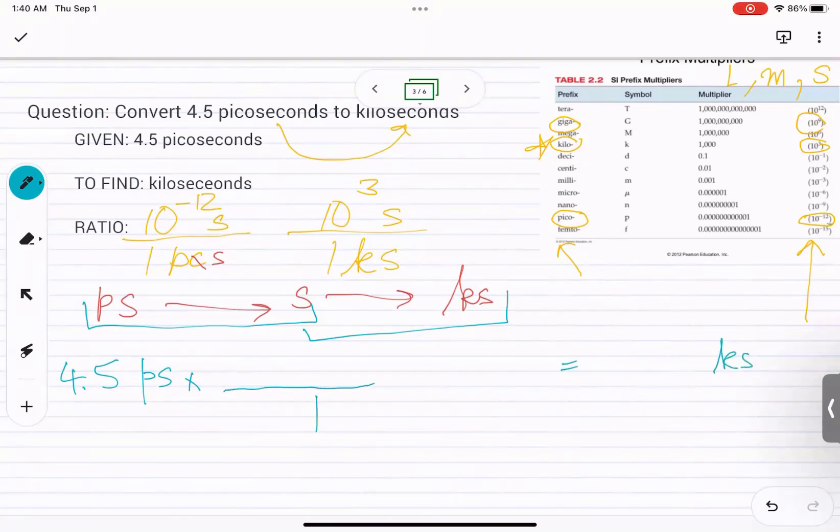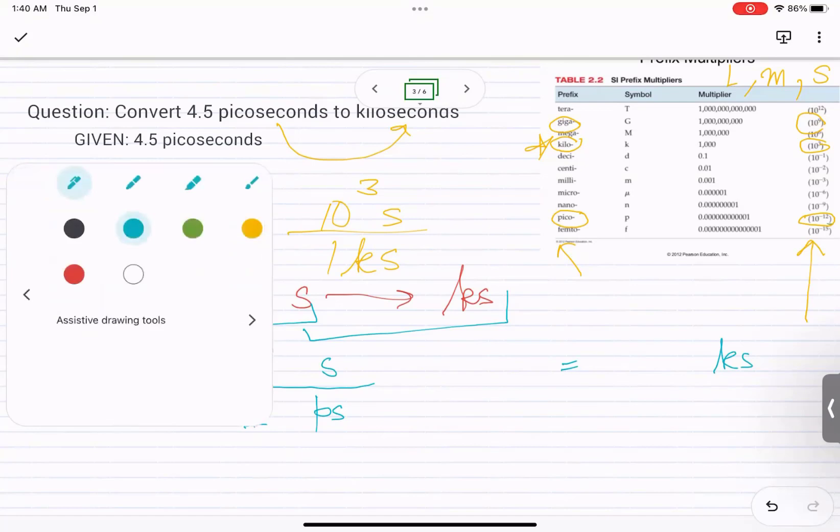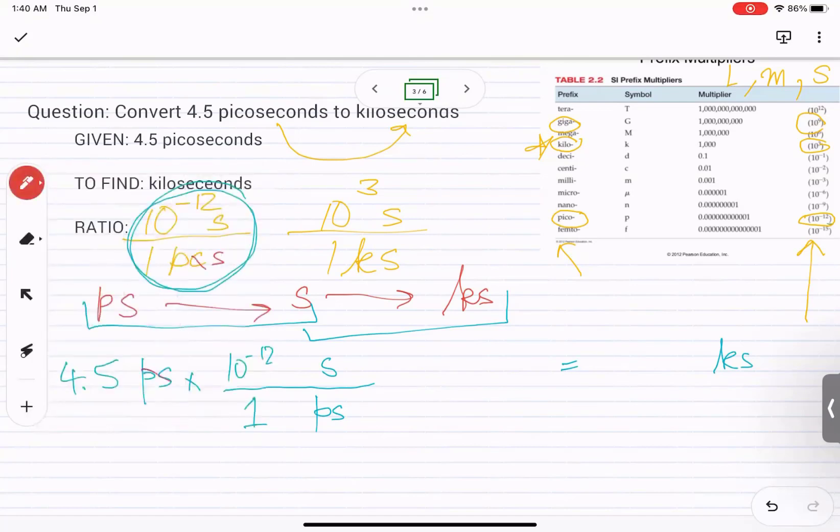So we want the picoseconds to cancel out. So we're going to use one picosecond and on the top 10 raised to negative 12 seconds. Make a note at this point, check if the units cancel out. Yes, we are left with seconds.